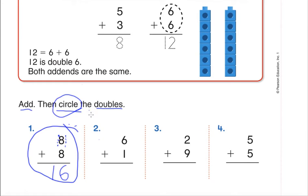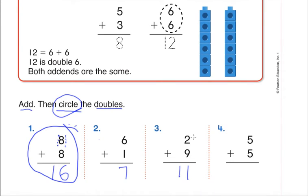Let's go over these together. For number two we have six plus one — we count on from six, and one more is seven, so six plus one is seven. Is this a doubles fact? Nope, so we're not going to circle it. Make sure you're checking your answers as we go. Our next one is two plus nine. I'm going to count on from the big number: nine, ten, eleven — so two plus nine is eleven. Are two and nine a doubles fact? No, so we're not going to circle that one.